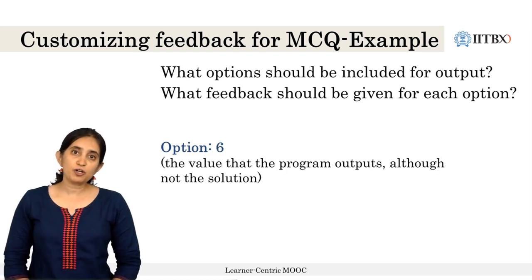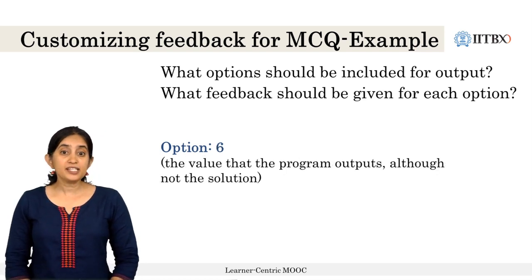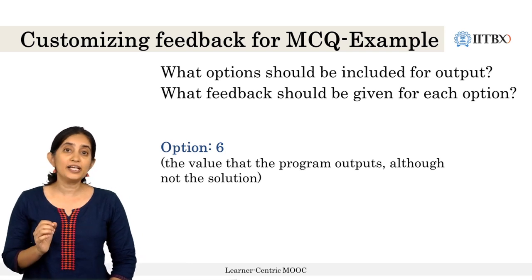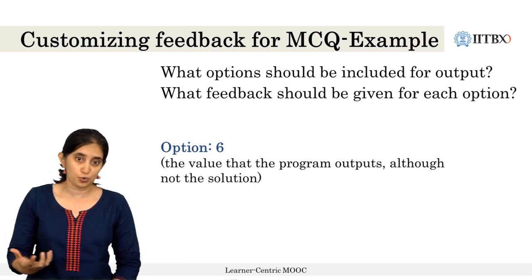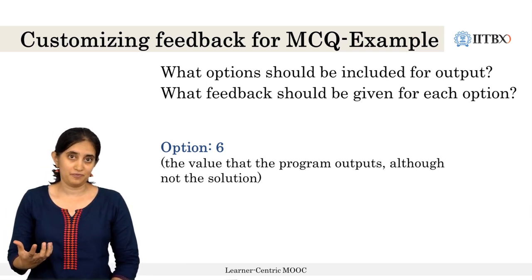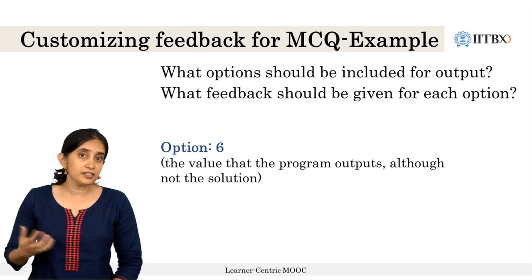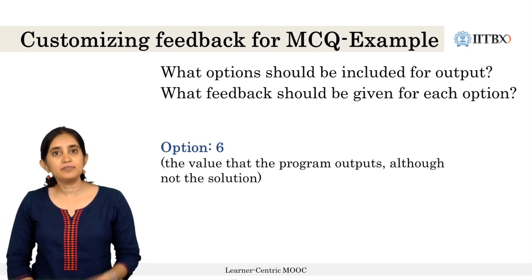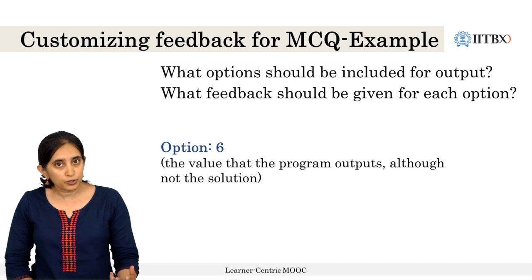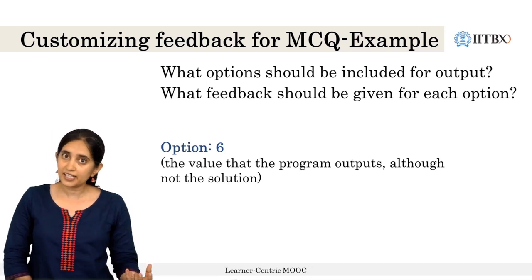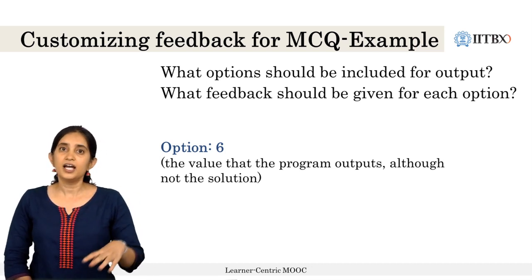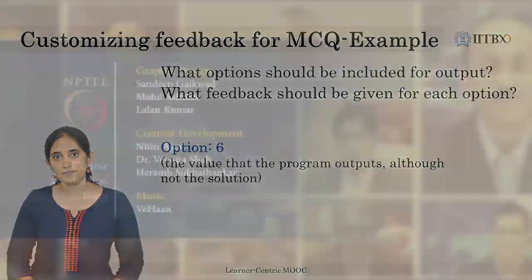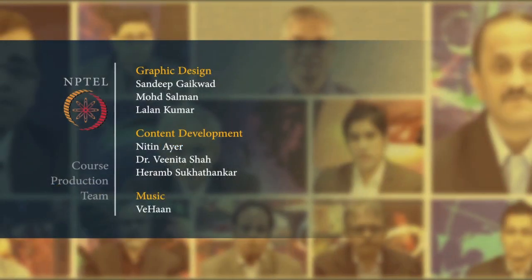Another option can be 6, which is in fact what the program outputs even though it is not the solution to this question. Some learners may have chosen 6, and the feedback can tell them that yes, this is what the program outputs; however, this is not the right answer, and try to help them see where the discrepancy is.